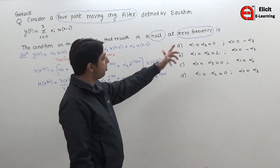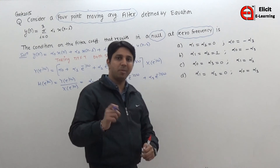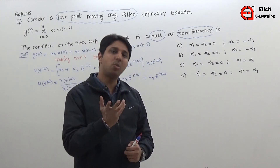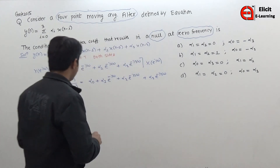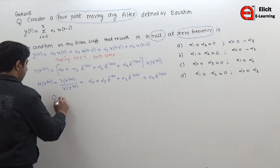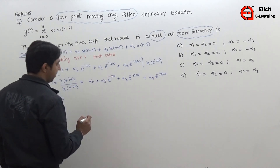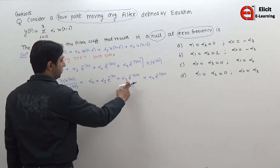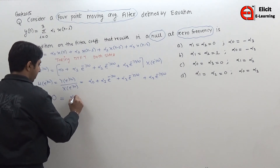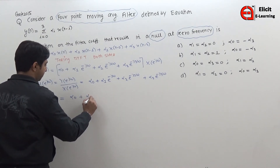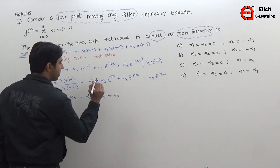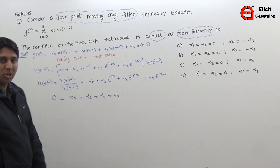Now putting frequency ω = 0 into the transfer function: since e^0 = 1, all exponential terms become 1. The null condition (output = 0) requires all filter coefficients to satisfy: α₀ + α₁ + α₂ + α₃ = 0. We now check which of the given options satisfies this condition.